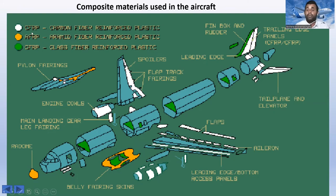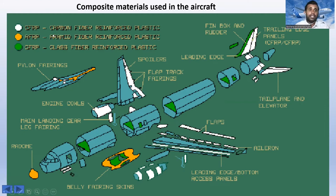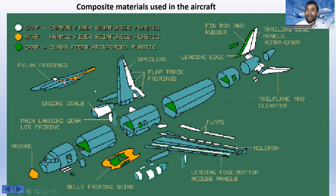The composite materials used are carbon fiber reinforced plastic (CFRP), aramid fiber reinforced plastic (AFRP), and glass fiber reinforced plastic (GFRP). In the diagram: white indicates CFRP, amber indicates AFRP, and green indicates GFRP. The fin box and rudder are made from CFRP. The leading edge of the vertical stabilizer is made from GFRP. The tailplane, elevators, spoilers, and airbrake surfaces are all made from CFRP.